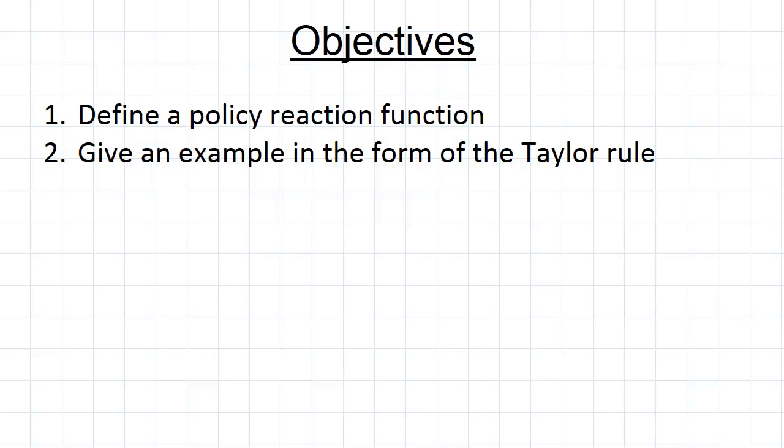Having an idea now of how the RBA sets the real interest rate in response to inflation and output gaps, you'd think we could come up with a function setting it out. So that's what we're going to look at in this video, the idea of a policy reaction function, and we'll give an example of it in the form of what we call the Taylor rule.